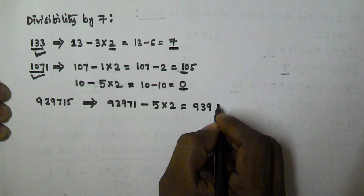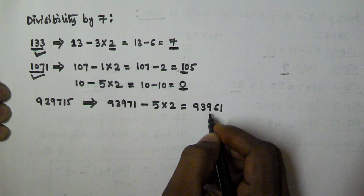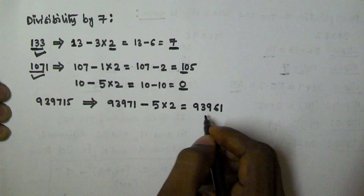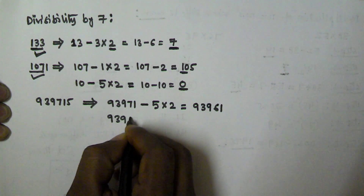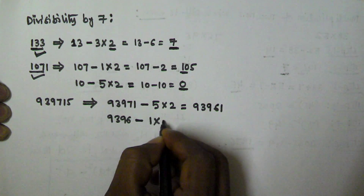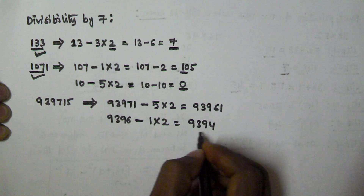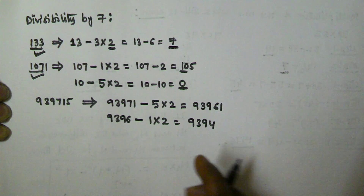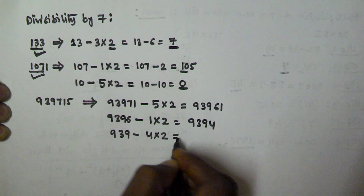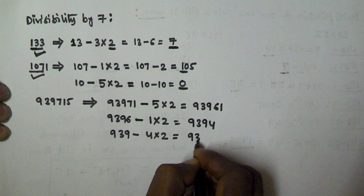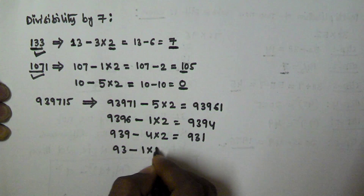We do not know if 93961 is divisible by 7, so we repeat the procedure. We take all digits except the unit digit — that is 9396 — then subtract the unit digit 1 multiplied by 2, giving us 9396 minus 2, which equals 9394. We still don't know, so we repeat again.